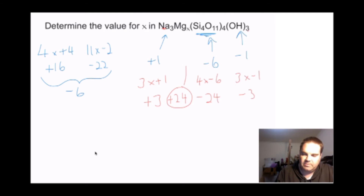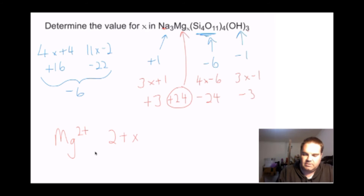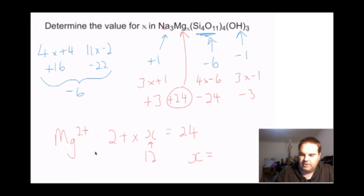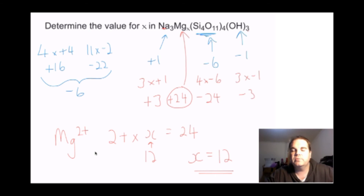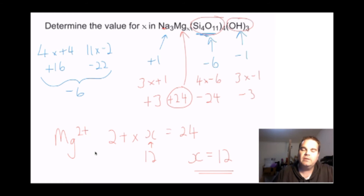The plus 24 must come from our magnesiums. Each magnesium has a 2-plus charge, so 2x equals 24, meaning x equals 12. So we have 12 magnesiums. Use the group numbers: sodium is group 1 so it's plus 1; calcium is group 2 so it's plus 2. Use those with the silicate values and any hydroxides to determine the metal ratio.